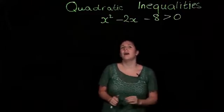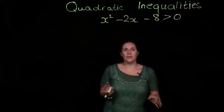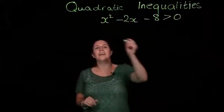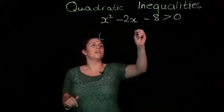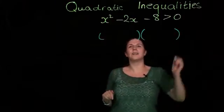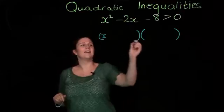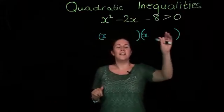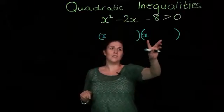The first thing we're going to do is factorize this. From your Junior Cert, you should remember two brackets: x and x. Then we need to decide what goes into these two places.